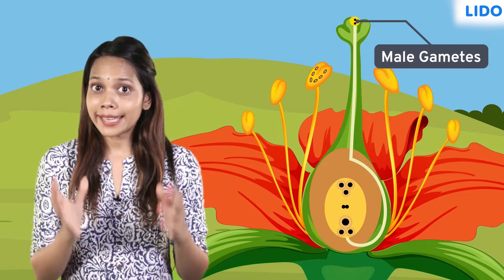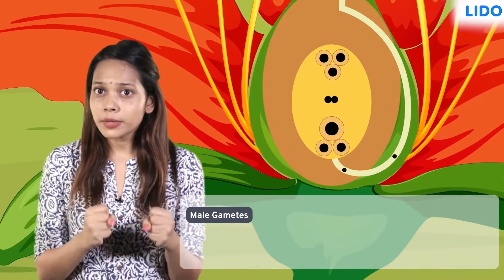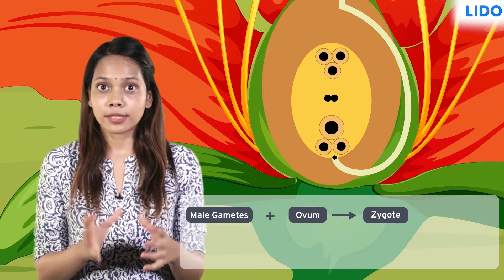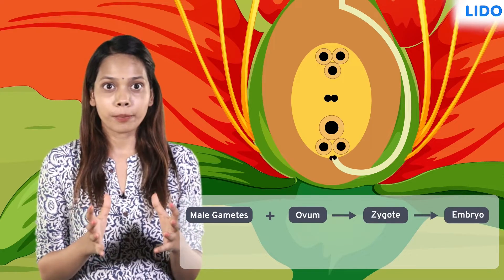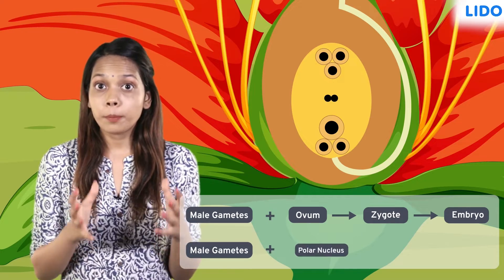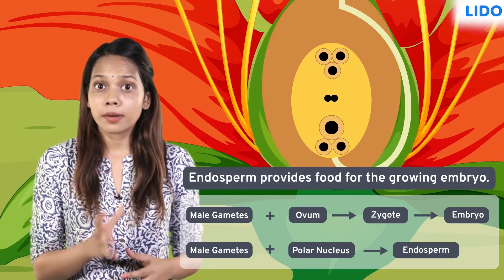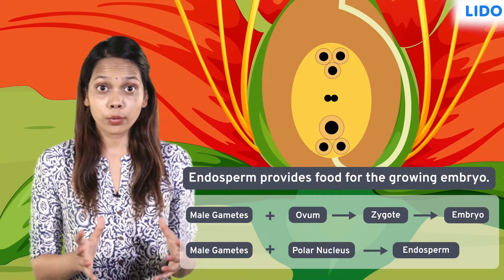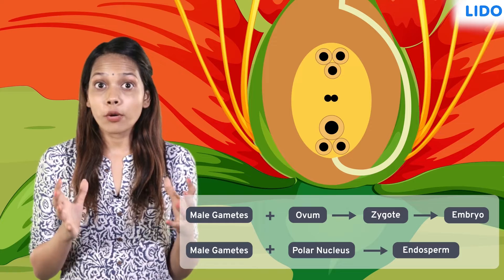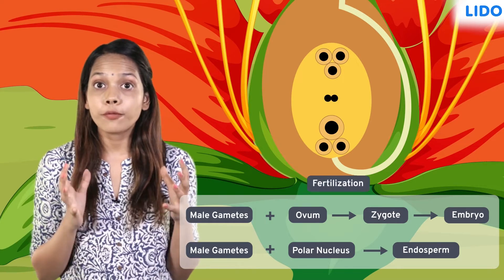When the pollen grains reach the ovary, they release two male gametes. One of the male gametes fuses with the female gamete of the ovule and produces a zygote, which contains the embryo. The other male gamete fuses with the polar nucleus and produces the endosperm. The endosperm provides food for the growing embryo. This process of fusing of male cells with the female cell is known as fertilization.